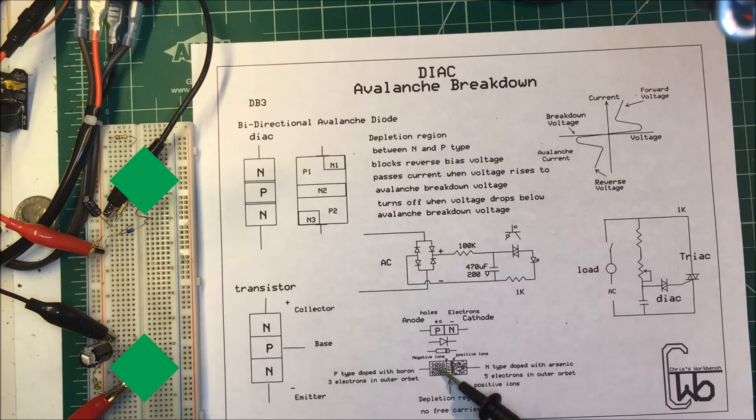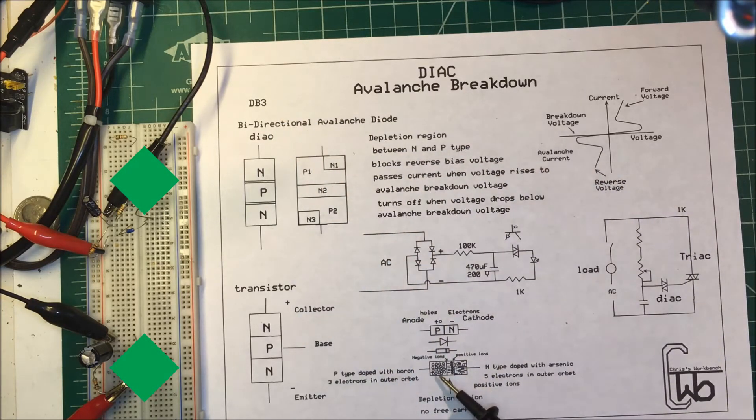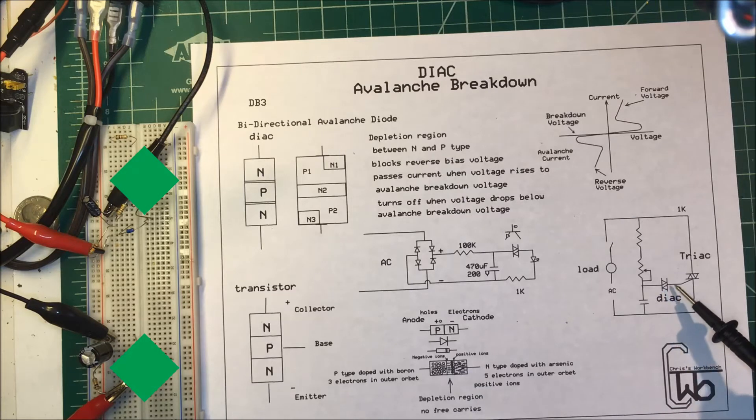But if we put enough voltage on here, in case of our DB3 DIAC it's about 32 volts, if we shove enough voltage on this side we can actually break this barrier down and cause an avalanche breakdown and current will flow through in the opposite direction. They use that effect for these DIACs.